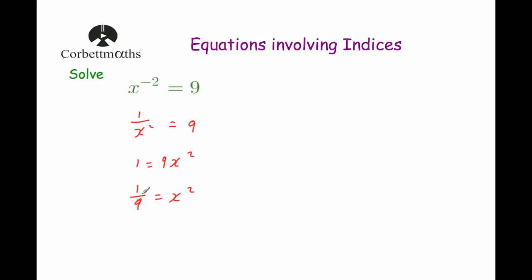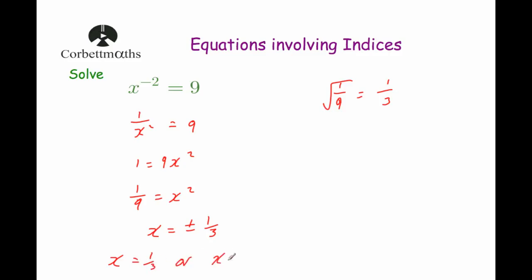We need to be careful here: when we square root both sides of x squared equals 1 ninth, remember that a positive squared is a positive, but a negative squared is also a positive. So we could have the positive or negative solution. The square root of 1 ninth: the square root of 1 is 1 and the square root of 9 is 3. So x equals positive or negative one third. We can check: one third to the power of negative 2 — the reciprocal of a third is 3, and 3 squared is 9. Or negative one third: the reciprocal is negative 3, and squared is 9. So those are two solutions.